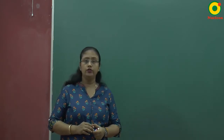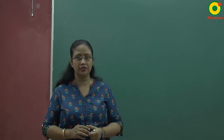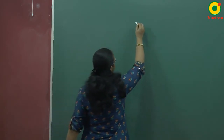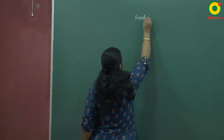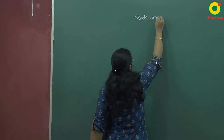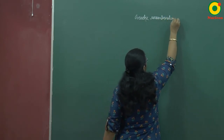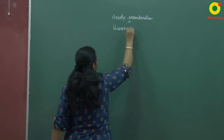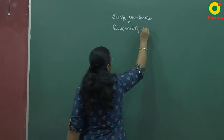Hello students. In the last lecture we discussed about the modes of asexual reproduction in bacteria. Now I am going to discuss about genetic recombination or parasexuality, because true sexual reproduction is absent in bacteria — there is no formation of gametes, no gametic fusion, no fertilization. So only genetic recombination occurs in this kingdom. We will now start with genetic recombination, also known as parasexuality in bacteria.